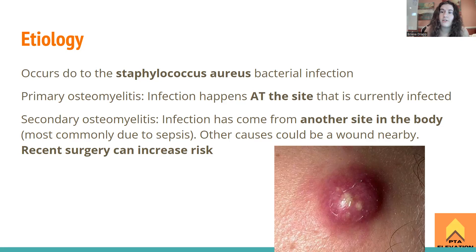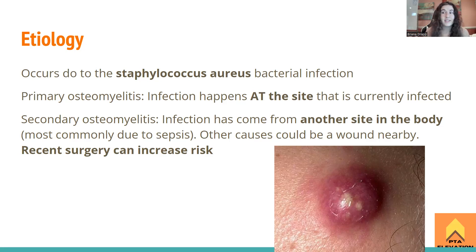Secondary osteomyelitis means something else somewhere else in the body caused it — the infection comes from another site. Nine times out of ten, it's going to be sepsis, which is an infection of the bloodstream. Because bone marrow is where blood is formed and is very close to the bloodstream, it's very easy for blood to bring a pathogen there. Other causes include a nearby wound, like a diabetic ulcer or pressure sore near the back that gets infected and travels to the spine.